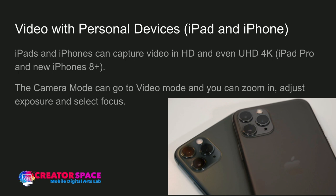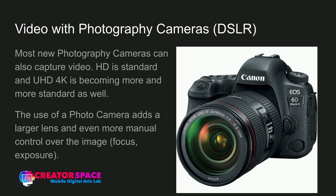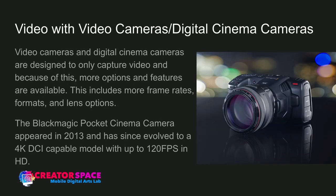For video with personal devices: iPads and iPhones are great — many iPad Pros and newer iPhones shoot HD and 4K Ultra HD. Just go to video mode, zoom in, adjust exposure, select focus, and all the same tools apply as with a digital cinema camera. For video with photography cameras: we have the Canon 6D full-frame DSLR available at all three library partners. It shoots HD (some can also do 4K) using the same photo lenses — including a 24-105mm zoom — and you simply switch to video mode.